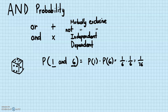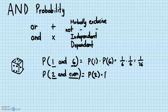Notice that independent events are not the same as mutually exclusive. For example, the probability of rolling a two AND the probability of rolling an even number — this is not mutually exclusive, but it is still independent because rolling a two does not affect rolling an even number. So the probability is just 1/6 × 1/2 = 1/12. You don't need to subtract anything.